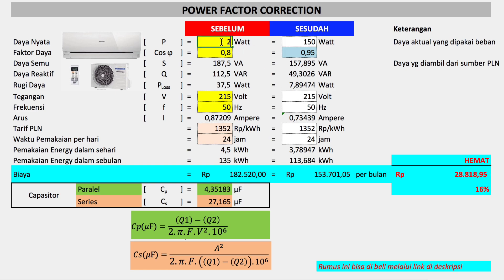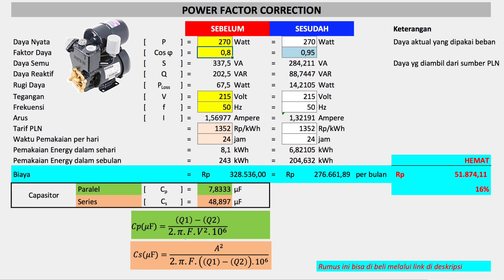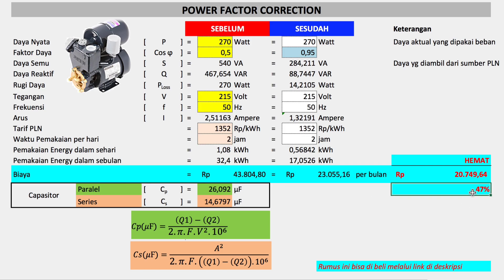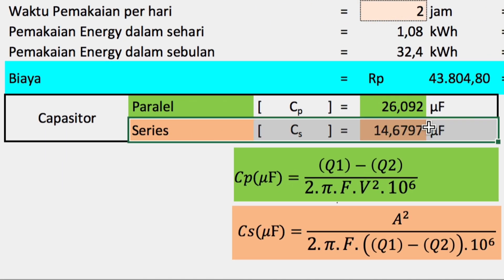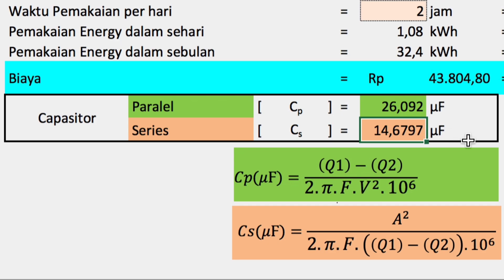Sebagai contoh misalkan pompa air, 27 Watt daya nyatanya pada saat kondisi pemakaian. Dengan faktor daya bisa mencapai 0,5 — ini rendah biasanya — ada yang 0,6, ada juga yang 0,8, tapi kita pilih kondisi 0,5. Pengurangan biayanya dalam per bulannya, karena pompa ini jarang dipakai mungkin perharinya hanya sekitar 2 jam, bisa pengurangan biaya itu sebesar 47%. Nilai mikrofaradnya lebih kecil dengan rangkaian seri, sehingga pembelian kapasitornya jauh lebih murah dibanding yang paralel.